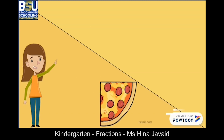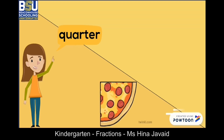And a quarter is written as q-u-a-r-t-e-r. Quarter. And in numbers it is represented as one over four, meaning I have one part out of four equal parts.